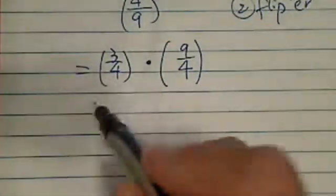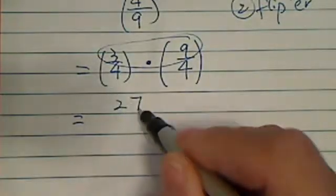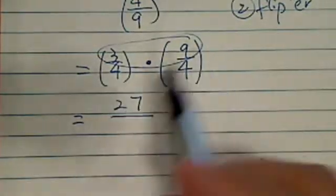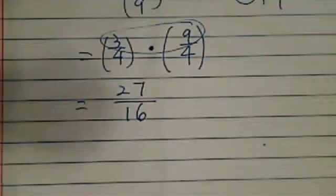So from here, you do top multiply by top, which is 27. 4 times 4, which is bottom times bottom, which is 16.